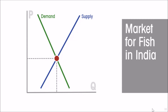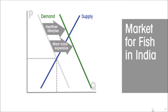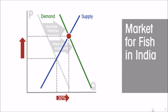We want to use the model to capture all of that. People are pursuing healthier lifestyles, and fish is a healthier food than meat. Also, meat — the alternative to fish — is becoming more expensive, so people are shifting from meat to fish. Both factors increase the demand for fish and shift the demand curve to the right. The new equilibrium after the demand curve shifts to the right represents a 30 percent increase in the quantity traded as well as a significant increase in price.